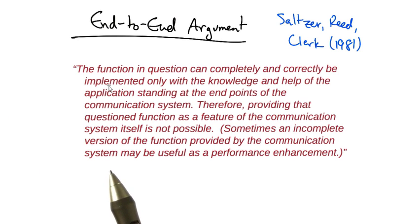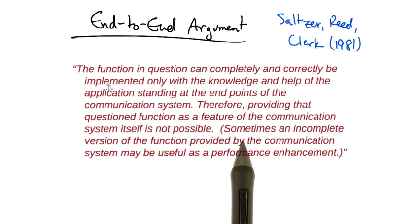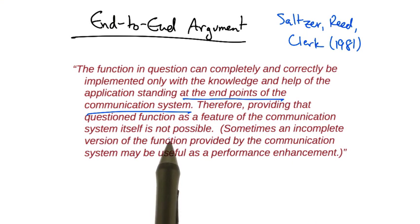In a nutshell, the end-to-end argument reads as follows. The function in question can completely and correctly be implemented only with the knowledge and application standing at the endpoints of the communication system. Therefore, providing that questioned function as a feature of the communication system itself is not possible.